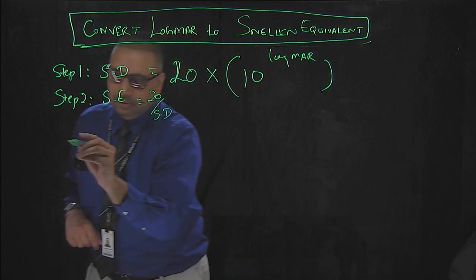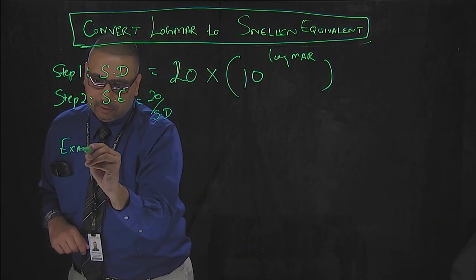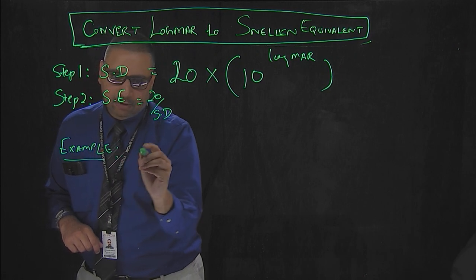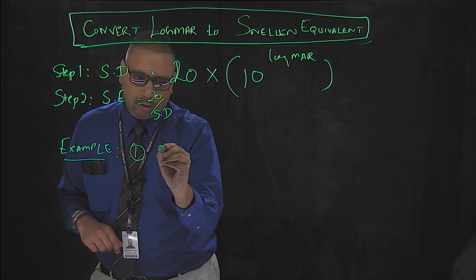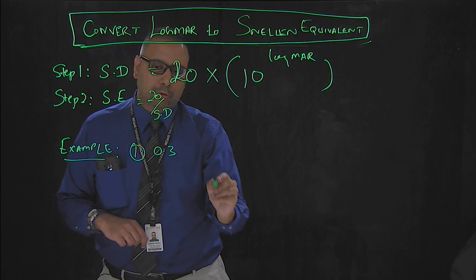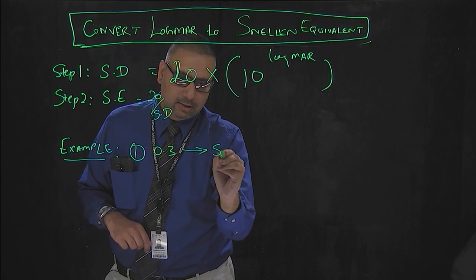Let us take an example. Example one: let us say you are given a log MAR value of 0.3, you want to find what is the Snellen equivalent.